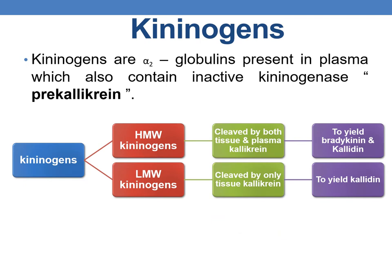Coming to kininogens: kininogens are alpha-2 globulins present in plasma which also contain inactive kininogenase, which is pre-callicrin. Kininogens are mainly of two types — high molecular weight kininogens and low molecular weight kininogens. The high molecular weight kininogens are cleaved by both tissue and plasma callicrin and they yield bradykinin and calidin, whereas low molecular weight kininogens are cleaved by only tissue callicrin and they yield calidin.